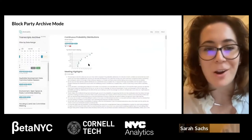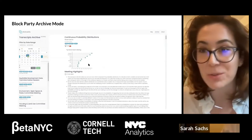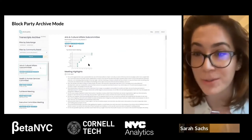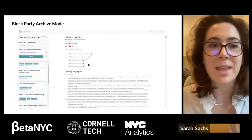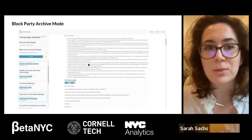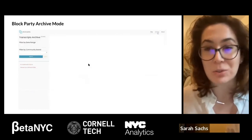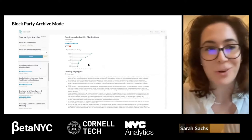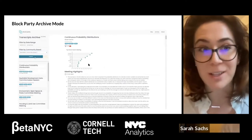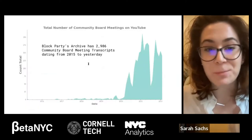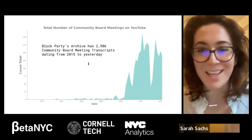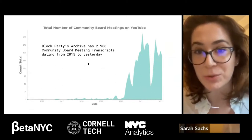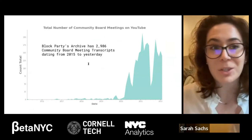This is a preview of what our platform looks like — you can find us at blockparty.studio. You can see the different topics we classify a meeting as, the top words of what gets discussed most often, and then the meeting highlights. This public archive dates back to 2015. You can use this toolbar to search and filter for different community boards and date ranges. This visualization shows just how many meetings there really are, with a giant spike since 2020 when community boards transitioned to YouTube — overall, we have just under 3,000 community board transcripts in this archive.